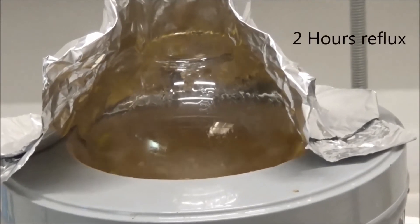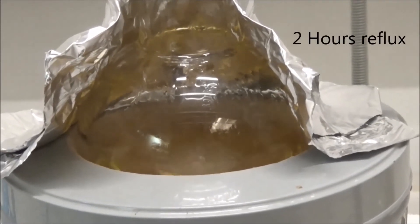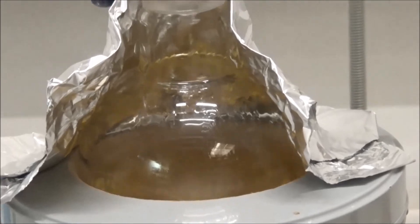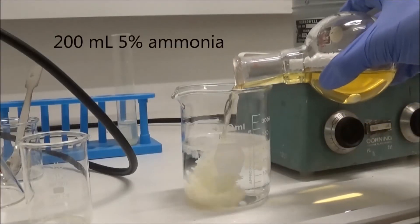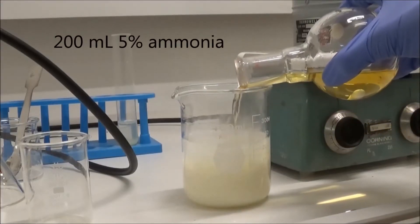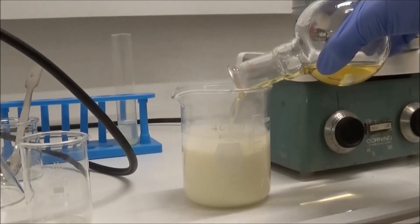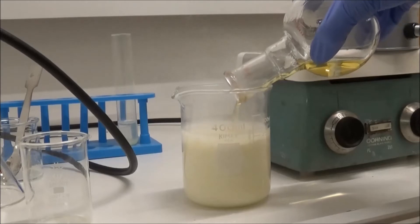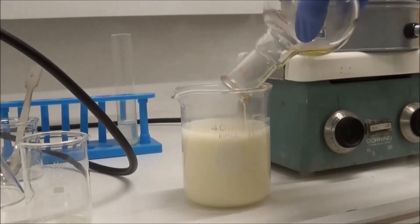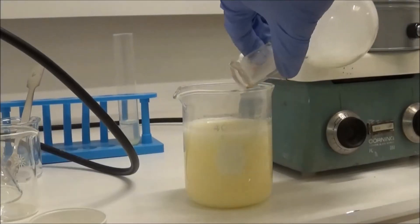The mixture was boiled for a total of 2 hours. After finishing reflux, it was cooled to room temperature and poured into 200 milliliters of 5% ammonia solution. The flask was rinsed out with more.